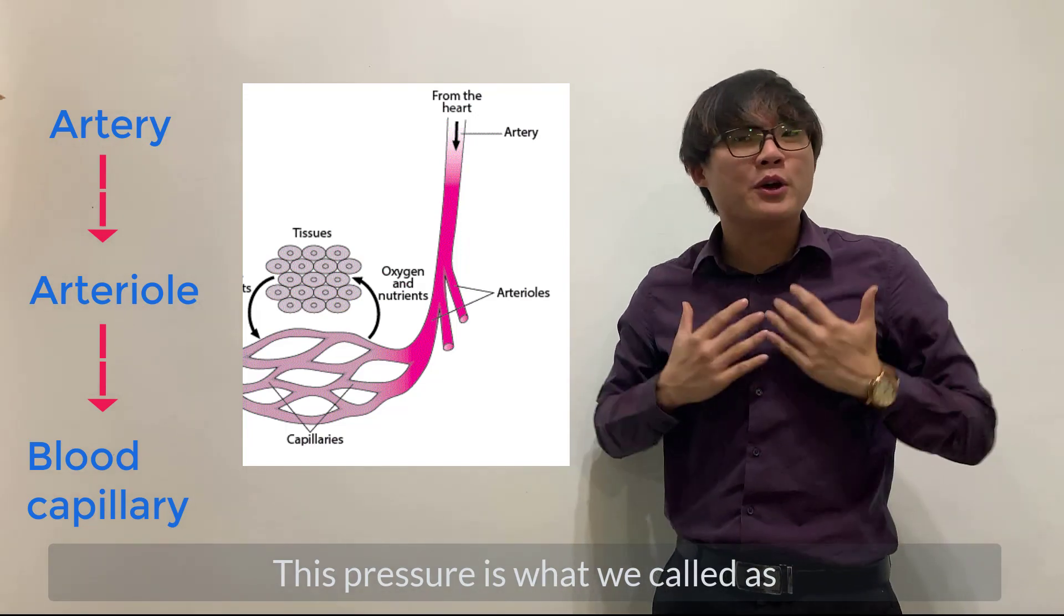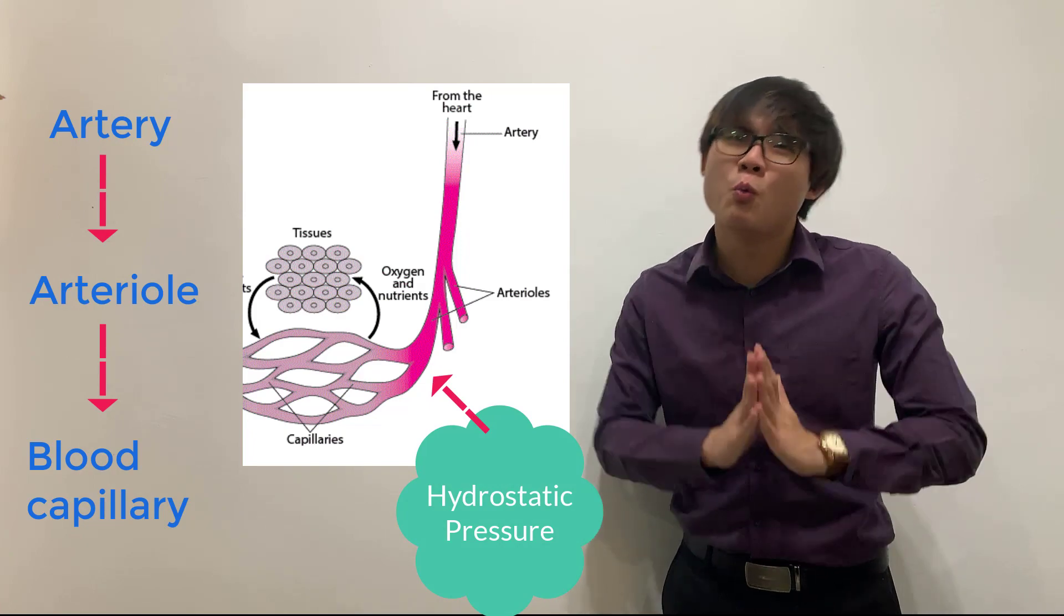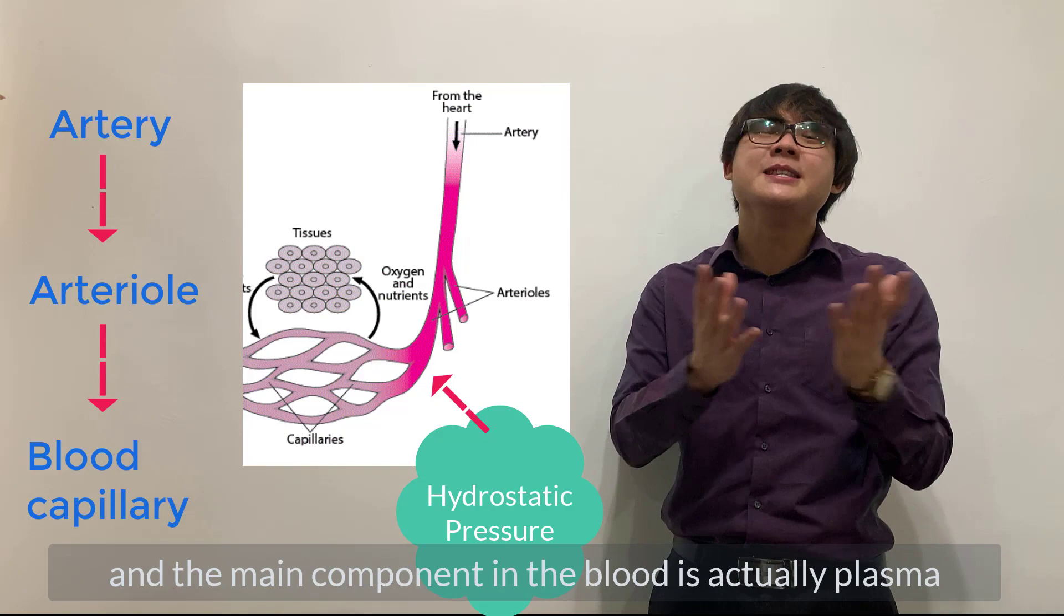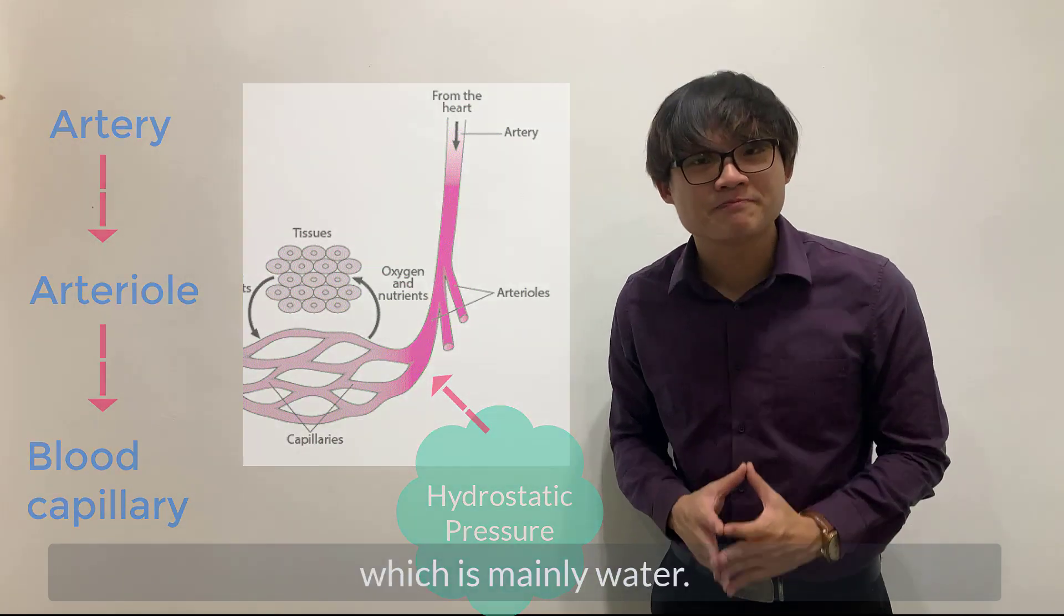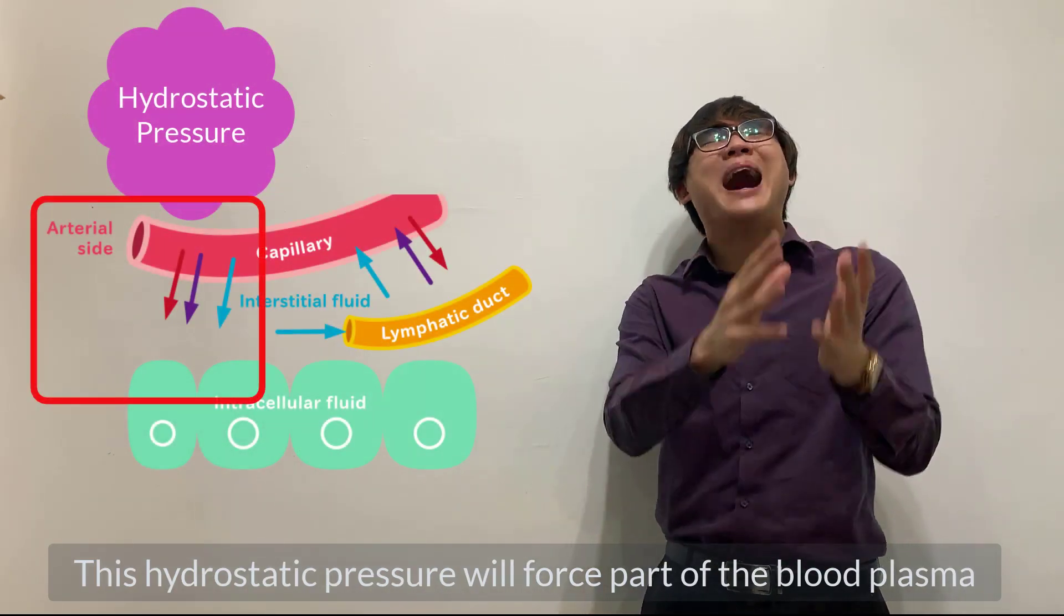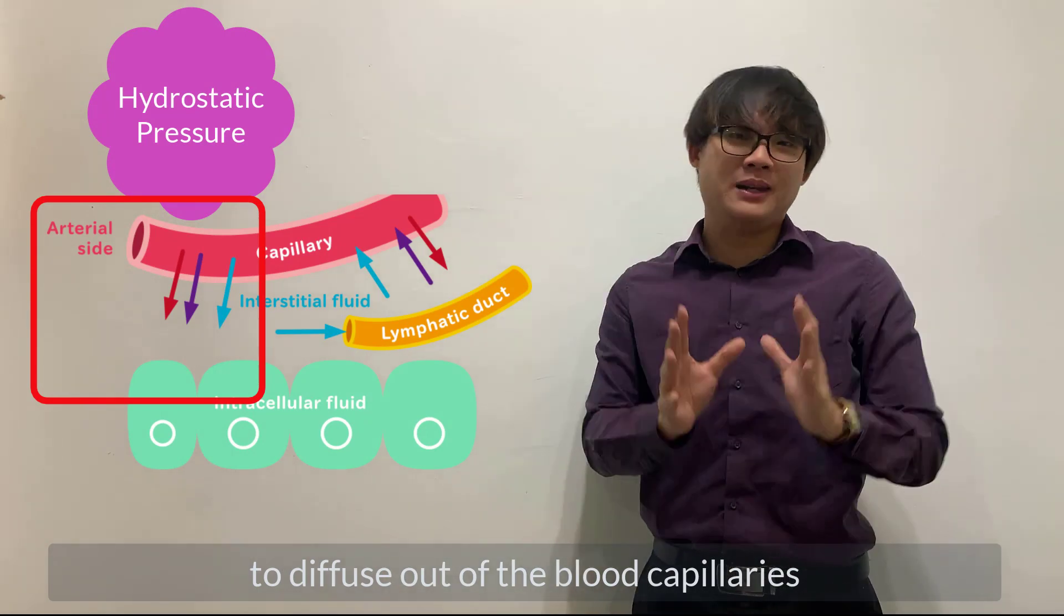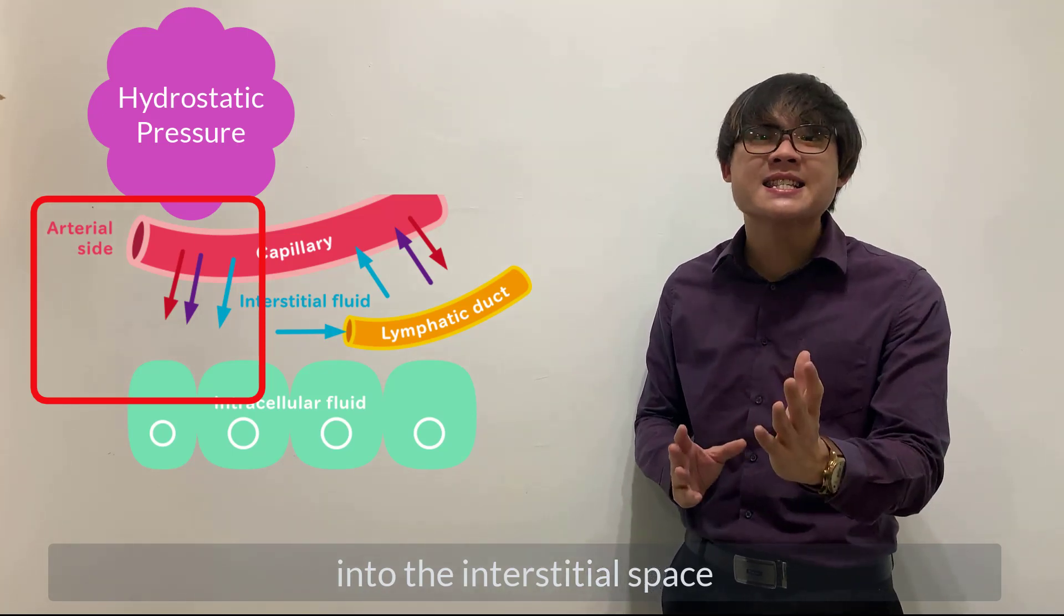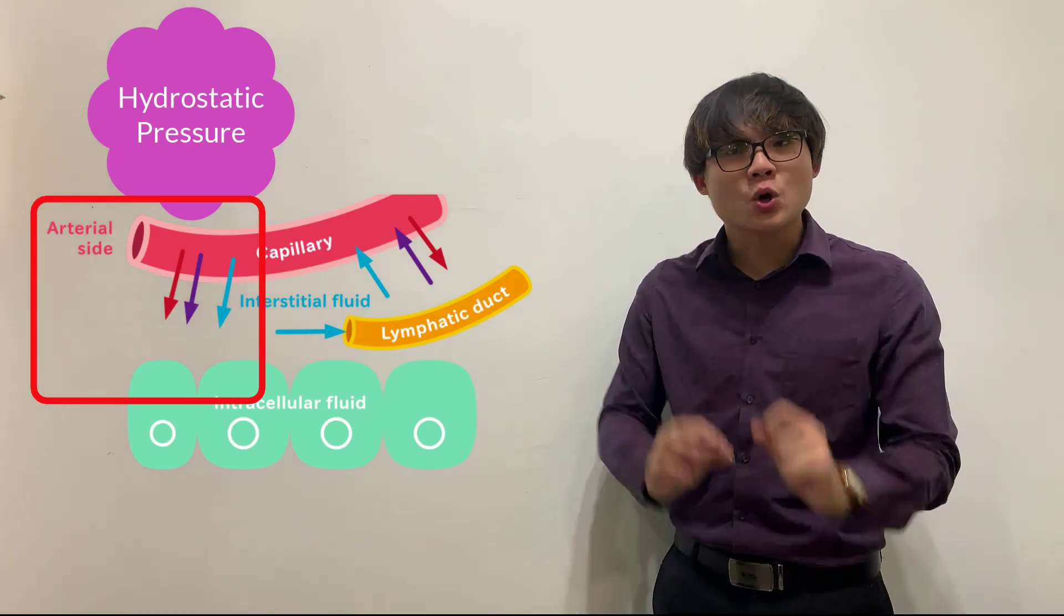This pressure is what we call hydrostatic pressure. Why hydro? Because hydro stands for water, and the main component in the blood is actually plasma, which is mainly water. So this hydrostatic pressure will force part of the blood plasma to diffuse out of the blood vessels into the interstitial space, forming interstitial fluid.